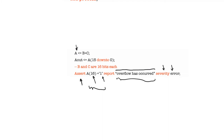Notice that this concurrent assert statement is constantly watching the value of A(16) because it is written concurrently with the body of the architecture — it's always monitoring that value. All parts of the assert statement are optional. You can write or ignore them. If you don't write the condition, the assert statement will assume the condition is always true. If you don't write the report, a default string is displayed. If you don't write the severity level, a severity level of error is assumed.